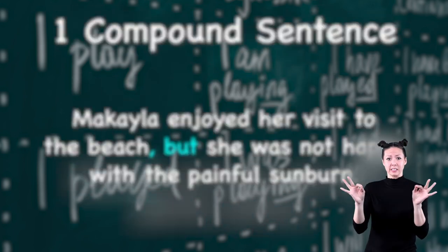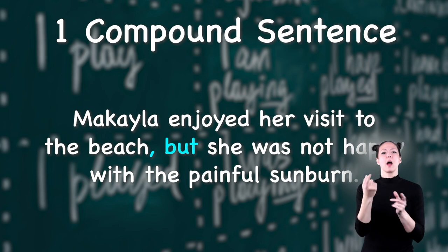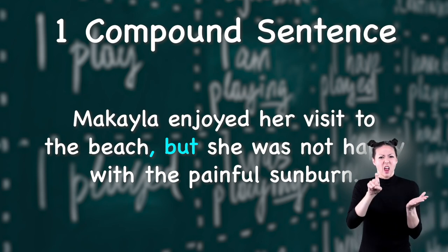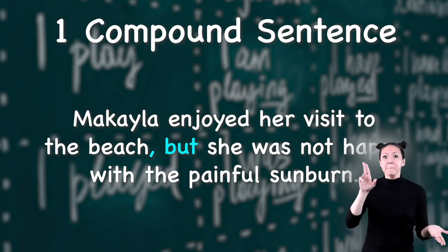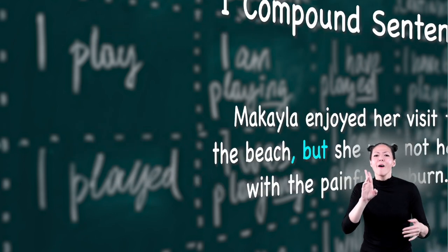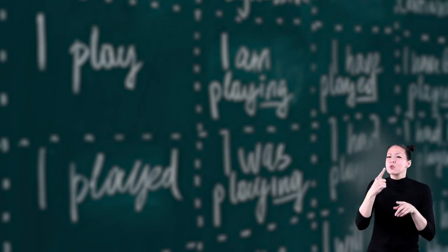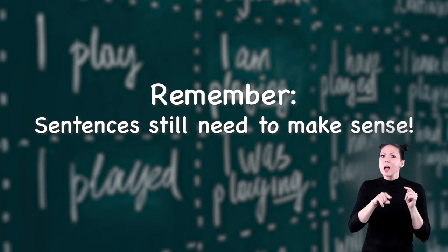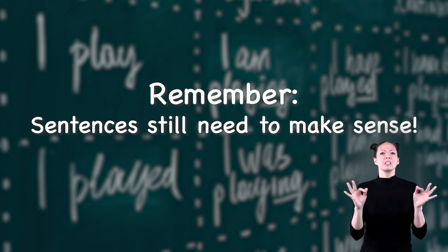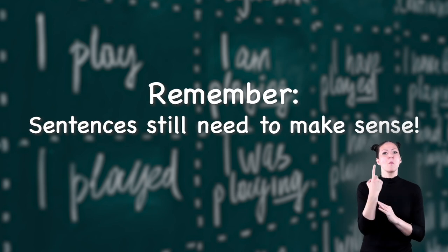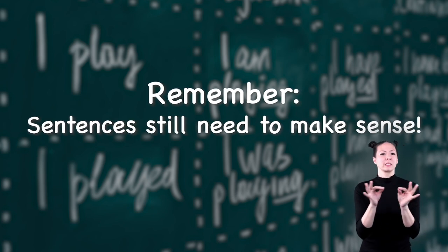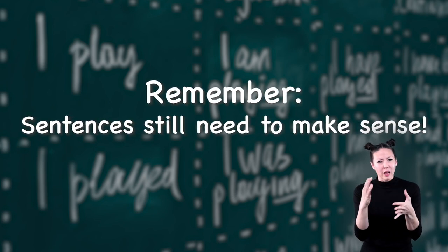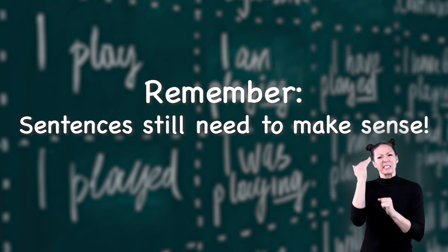Pretty cool — from two simple sentences to one compound sentence, just by adding a comma and a conjunction like 'but.' Of course, something to remember is that you can't just put any two simple sentences together to make a compound sentence. The sentences need to be closely connected and make sense together.